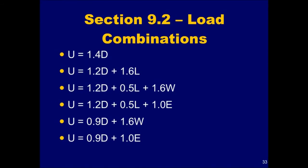Load combinations that would commonly control the design of beams and one-way slabs in typical building structures are summarized here. Included are the effects due to dead loads, live loads, wind loads, and earthquake loads.